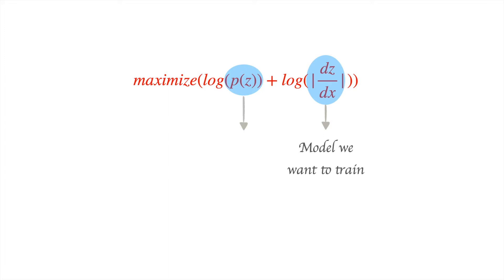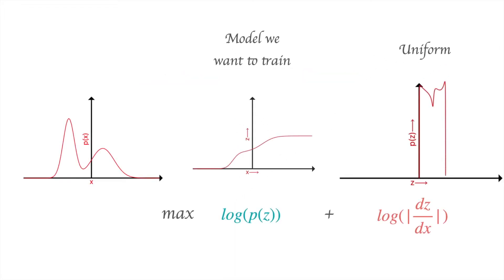But what about P(Z)? We don't know the distribution of P(Z). So we define P(Z) to have a uniform distribution, which gives us a way to evaluate this probability density. Thus we can maximize the sum of log P(Z) plus log of dz/dx, and this will maximize the log likelihood of X — meaning we will have learned the probability distribution of X.